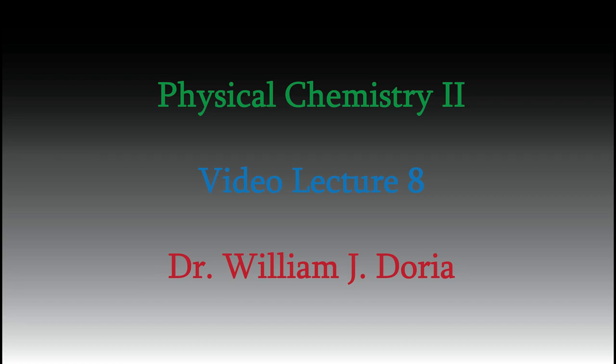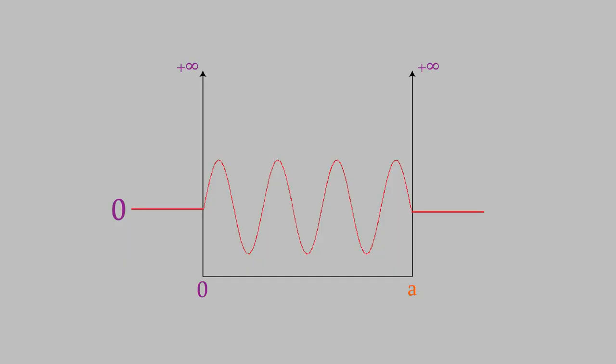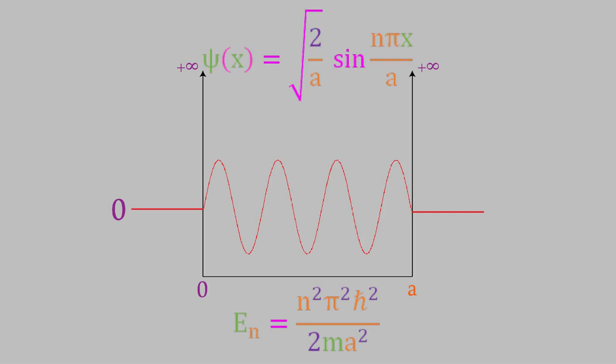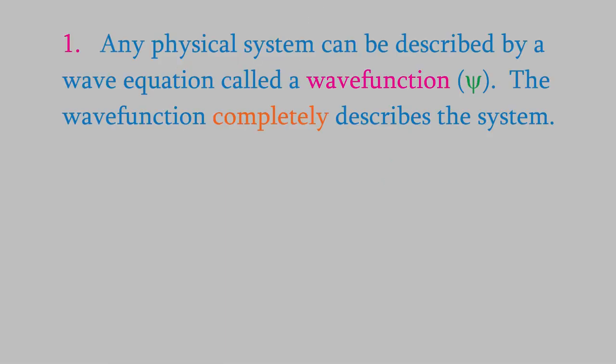Hi, and welcome back to my series of videos for Physical Chemistry 2. When we met last time, we completed our determination of the wave function for the particle-in-a-box model, and we also determined the energy for that model system. We found that the wave function is the square root of 2 over a times the sine of n pi x over a, where n is a positive integer and a is the length of the box. This is the first time we've seen the exact wave function of a system, and the first postulate of quantum mechanics tells us that the wave function contains all the information that it's possible to know for a system.